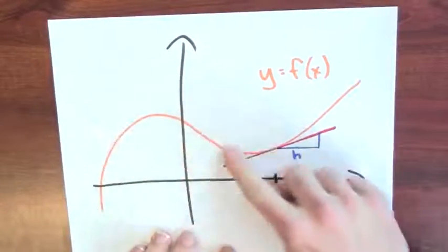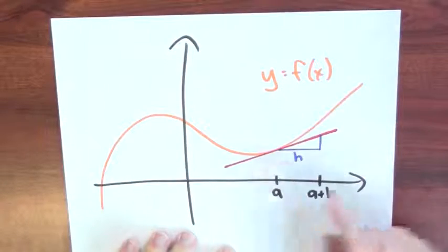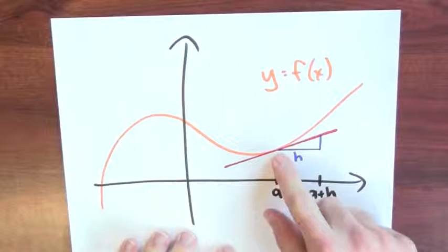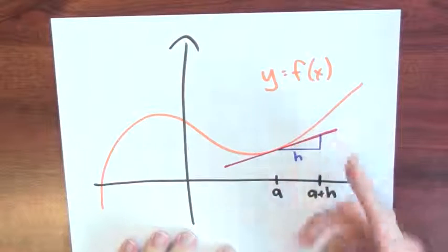Here I've drawn in orange the graph of some random function y equals f of x. And at this point, f of a, I've drawn in red the tangent line to the graph.